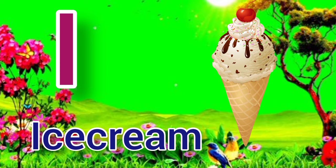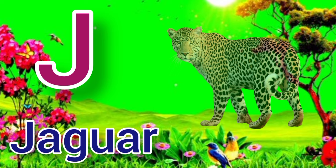I for ice cream, ice cream means ice cream. J for jaguar, jaguar means tendua. K for king, king means raja. L for lion, lion means sher.